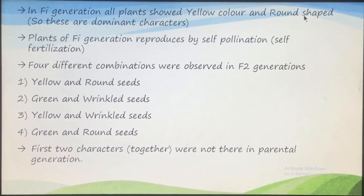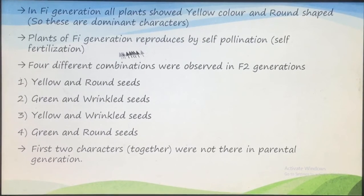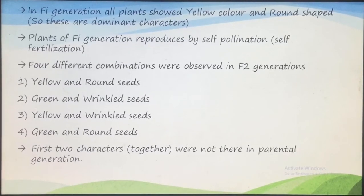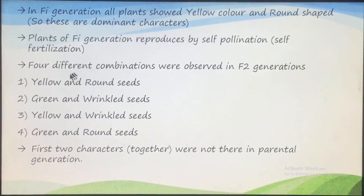Mendel wanted to see what happened in the F2 generation. To produce F2, you do not take the parent generation but take two plants from the F1 generation, allowing self-pollination or self-fertilization. In the parental generation only cross-fertilization takes place; in F2, F3, or F4 generation only self-pollination is done. In the F2 generation, Mendel found four different combinations of plants — some were yellow color and round seeds, which were not present together in one parent.